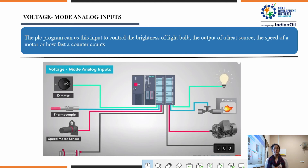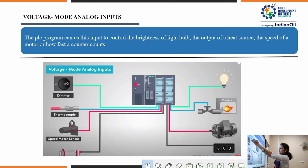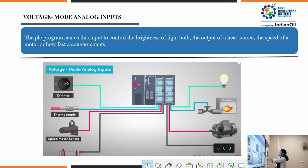Since we are discussing signals and the mode of signal, it can be analog or current mode. In analog mode, various sensors feed their output to a controller, and the output from this controller can control various processes. For example, a dimmer sensor, a thermocouple, a speed motor sensor, and a proximity sensor — at the output side these are used to control the brightness of a bulb, the output of a heat source, the speed of a motor, or the count of a counter.